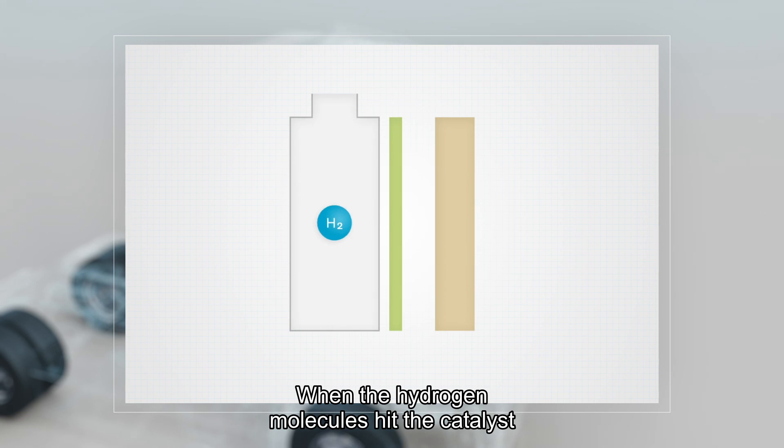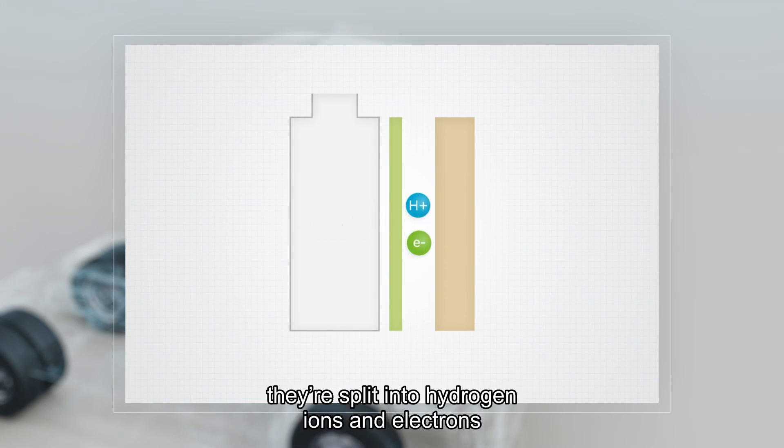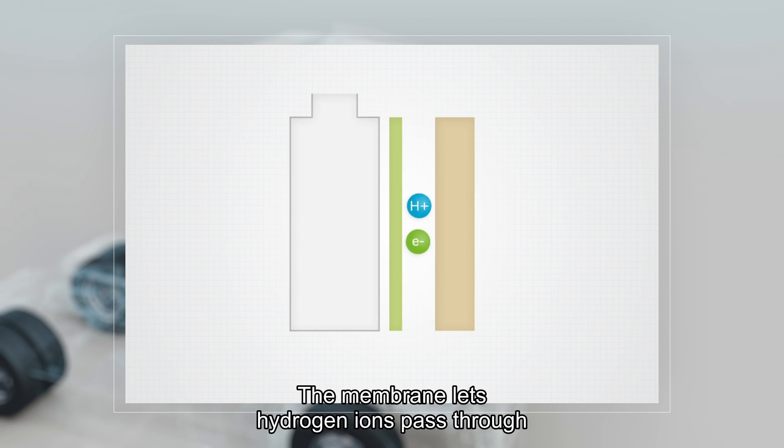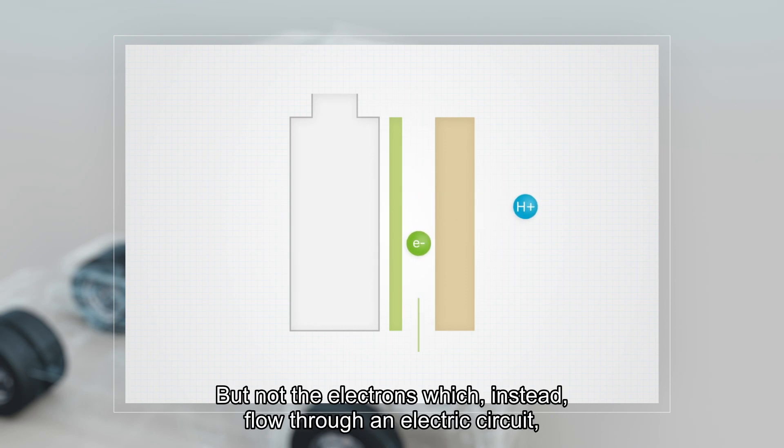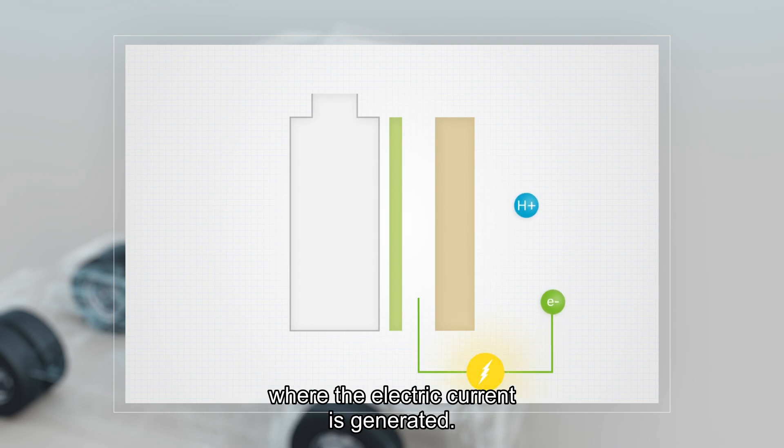When the hydrogen molecules hit the catalyst, they are split into hydrogen ions and electrons. The membrane lets hydrogen ions pass through, but not the electrons, which instead flow through an electric circuit where the electric current is generated.